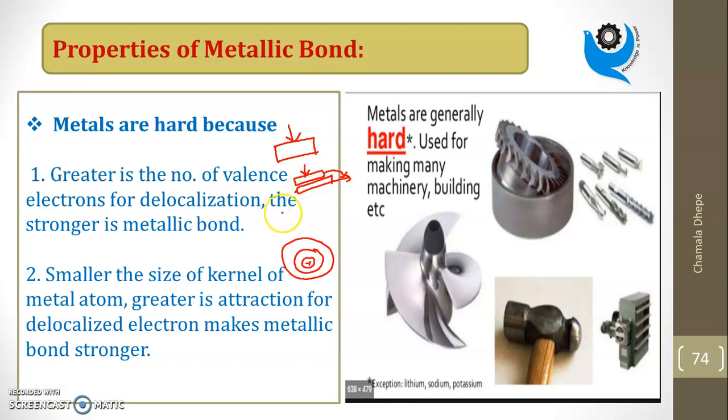Because of this hardness property, metals are used for making machinery, building materials, and construction. All these are prepared from metals like iron and steel because they have the hardness property. Always remember, tungsten is the hardest metal, its symbol is W. The softest metal is potassium, K.